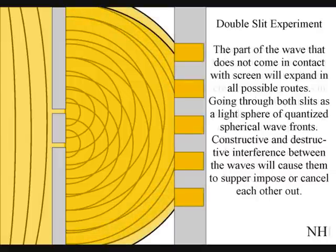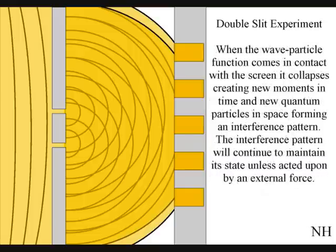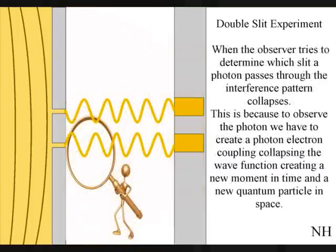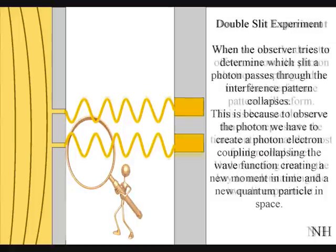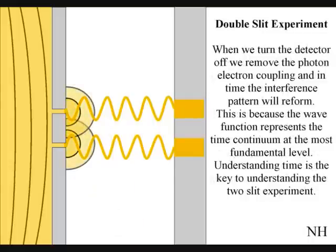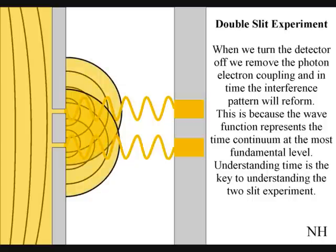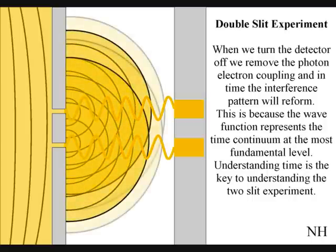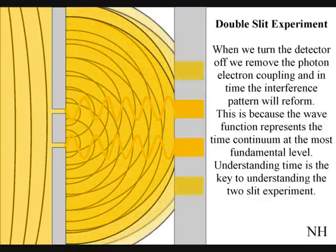When the observer turns on a detector to determine which slit a photon passes through, the interference pattern collapses. At that moment in time, the interference pattern will disappear, because to observe the photon, we have to physically create a photon-electron coupling, collapsing each wave-front into a new quantum particle that will have its own position in space and time that the wave-front never had before the collapse. If we turn the detector off, we remove the photon-electron coupling, and in time the interference pattern will reform. Just like in Newton's first law of motion, the interference pattern will continue to maintain its state, unless acted upon by an external force.